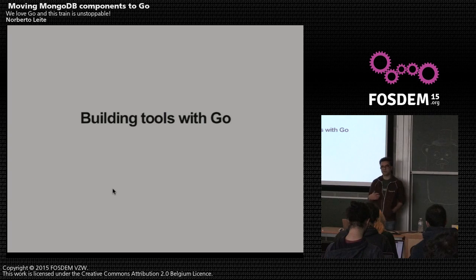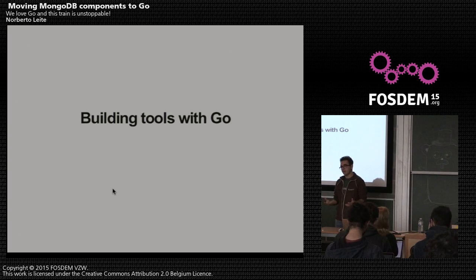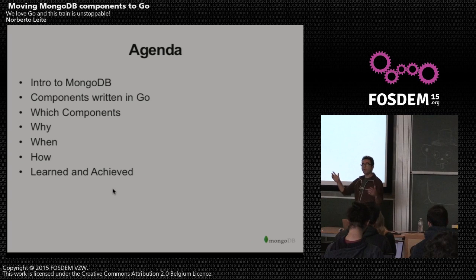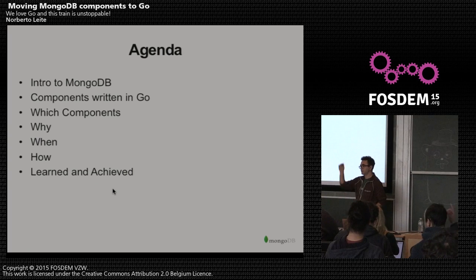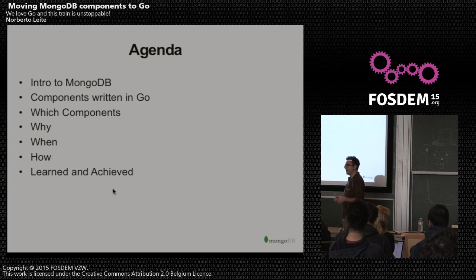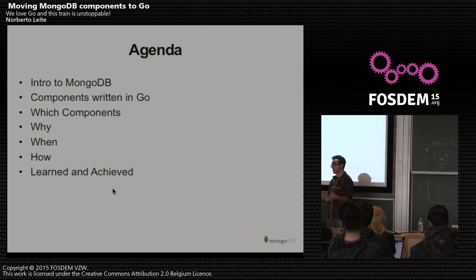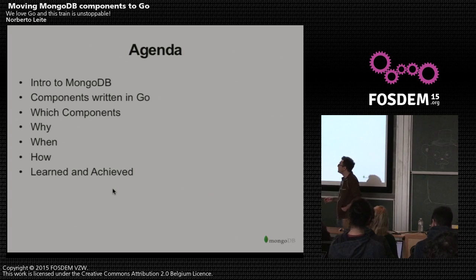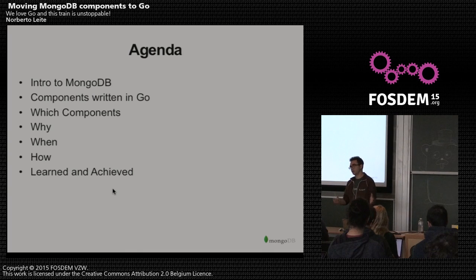It's about us as a company, as a project, setting up a set of tools that the database requires that are purely written in Go. I've been mandated to do a little bit of introduction to MongoDB, because there are a couple of people here who don't know what it is. I'm also going to talk about the components we've written in Go — which ones, why, when, how, and the lessons we learned when porting a big chunk of C++ into Go.